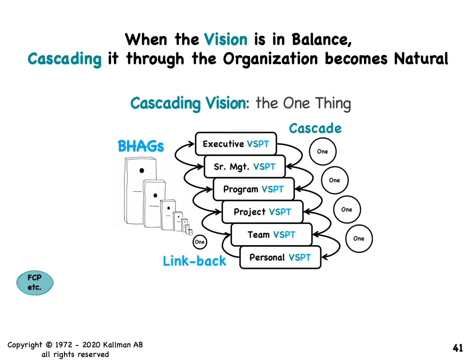He ended up having insane percentages of growth year on year until he became one of the largest real estate agencies in the U.S. One of the things we link back — and we do this using retrospectives with the team, team health checks, and flow friction analysis — is that about every three months, individuals would give their one things back to the team.